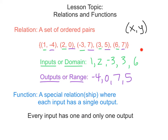Let's see what that would mean in this example. Does every input value have one and only one output? Here's an input value: 1. Its output is negative 4. Is there another ordered pair that has an input of 1 and a different output? No. The 2 has an output of 0 — there's not another input of 2. Negative 3 has an output of 7, and there's no other negative 3 input. Then we have 3 as an input with an output of 5, and 6 as an input with an output of 7. So this relation is, in fact, a function — a special relation where each input has a single output.